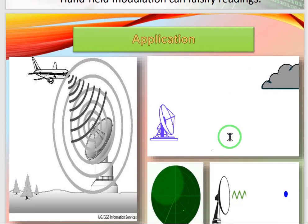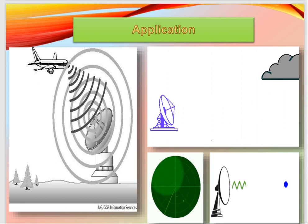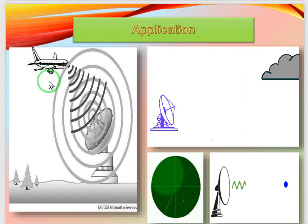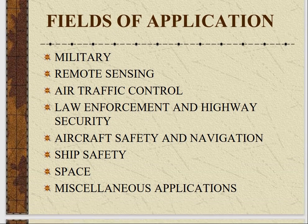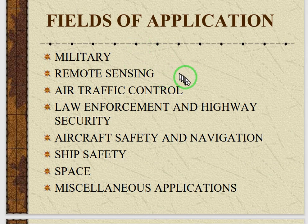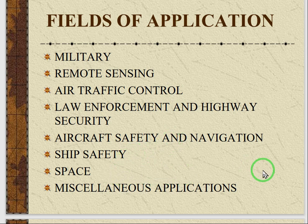The applications are defined here in diagram form. The diagram defines the identification and information system — it can be input for weather monitoring and object identification. Fields of application include military, remote sensing, air traffic control, law enforcement and highway security, aircraft safety and navigation, ship safety, space, and other applications.